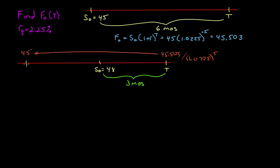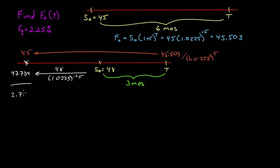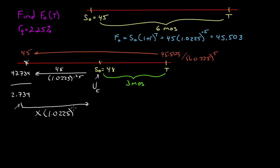Let's take this $48 and bring it back, because we can't compare money at different points in time. We bring $48 back three months: 48 divided by (1.0225)^0.25 gives us 47.734. Minus the $45 leaves 2.734. But we want Vt — the value at time t. We can bring the dollar values back to time zero to compare them, get the difference, and then bring that forward: 2.734 × (1.0225)^0.25. And we get 2.75. All without using any derivatives formulas whatsoever — just treating it as a time value of money problem.